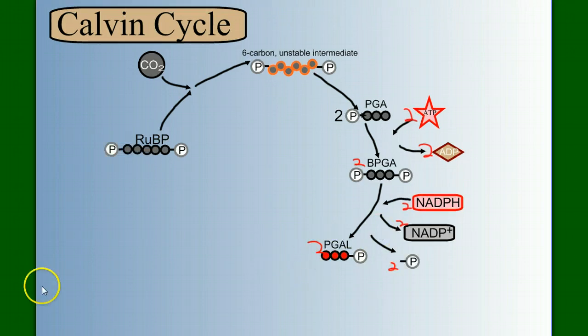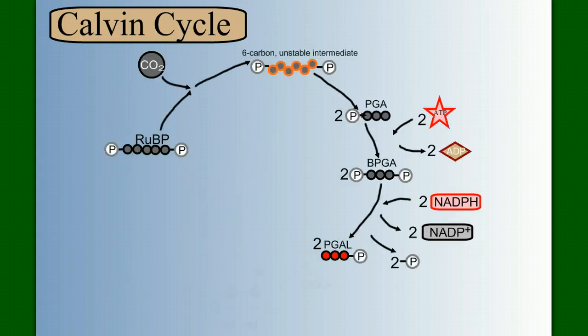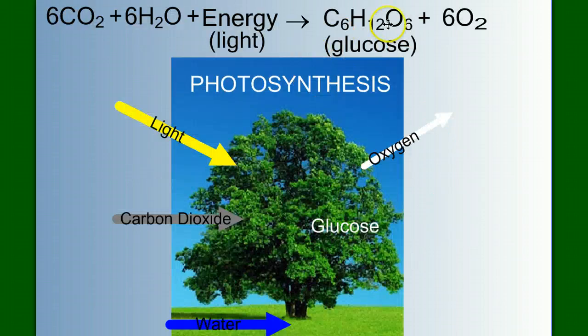So two PGALs, two three-carbon molecules. Now these two three-carbon molecules is enough to make one six-carbon sugar. So if we go back to our cycle, we take two PGALs and make a sugar. And now we're done. Wasn't that the point to make sugar? Let's look back at the overall reaction. We're going to make sugar.